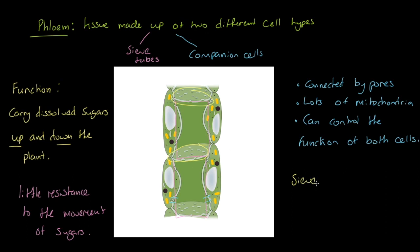Those sieve plates, remember they were previously the end walls, they've differentiated to ultimately become sieves. You see these holes in here which help to support the main function of these cells, which is the carriage of dissolved sugars.